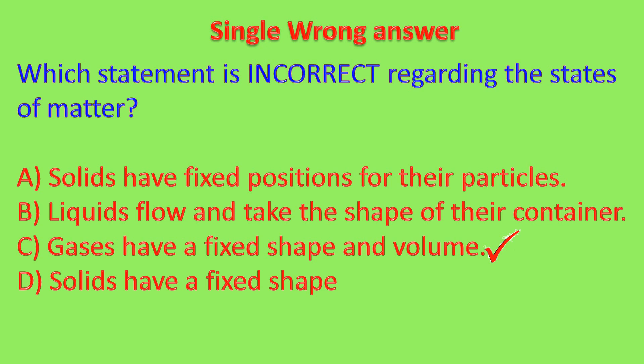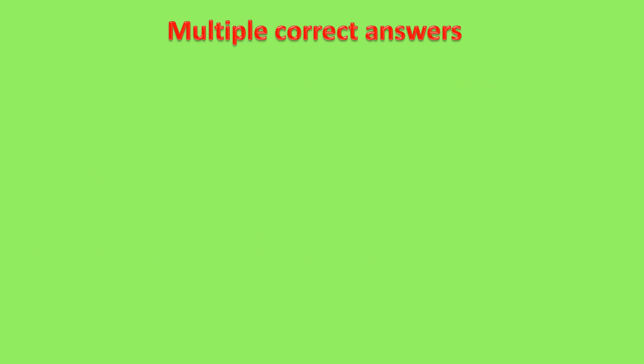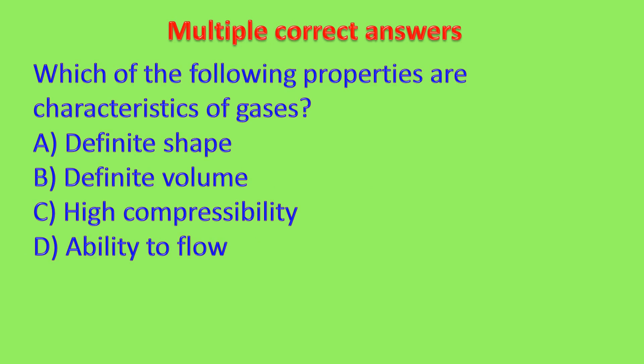Now, a multiple correct answers question: which of the following properties are characteristics of gases? The options are: definite shape, definite volume, high compressibility, ability to flow. Observe carefully which characteristics of gases are correct. C and D — high compressibility and ability to flow — are the correct properties of gases.